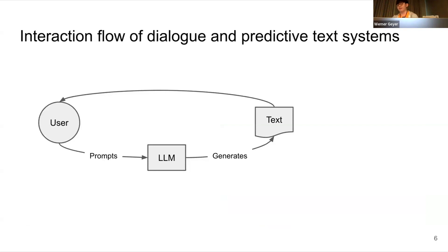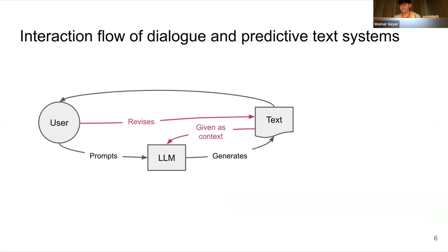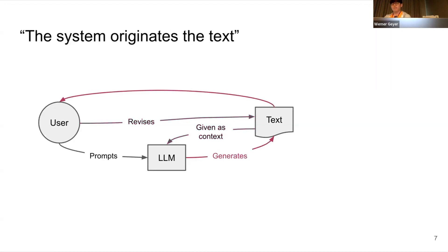Here's the updated interaction flow diagram showing the UI affordances of both dialogue and predictive text systems. Users can directly revise the text being generated, which is continuously used as context by the LLM to generate more text. Users can still directly prompt the LLM to generate more text, which is also supported by GitHub Copilot. But notice that in this interaction flow diagram, both of these systems embody the principle that the system originates the text — either by directly generating it or manipulating it — which is then given to the user as a final outcome they can easily replace their text with.